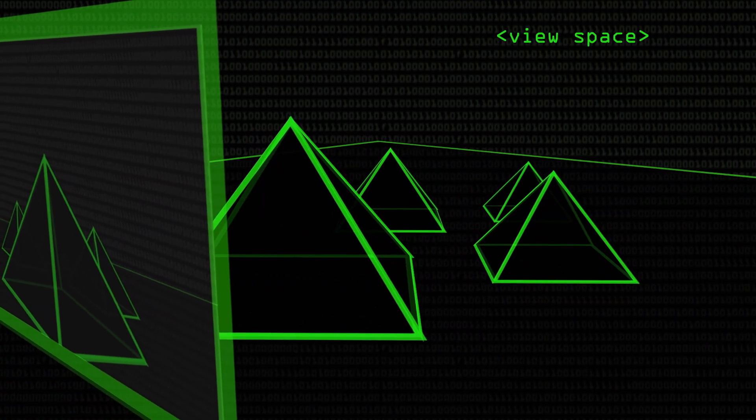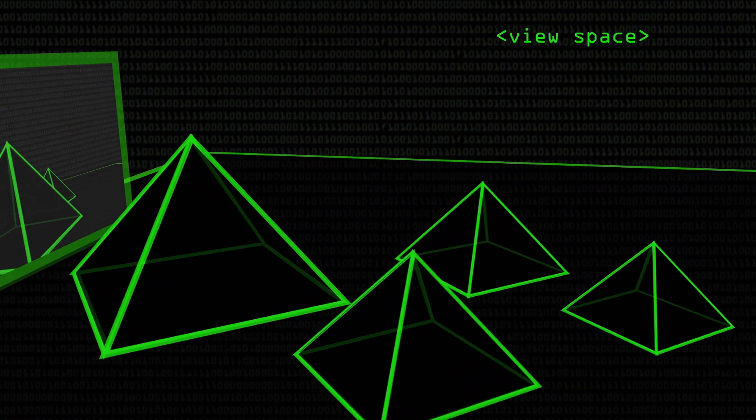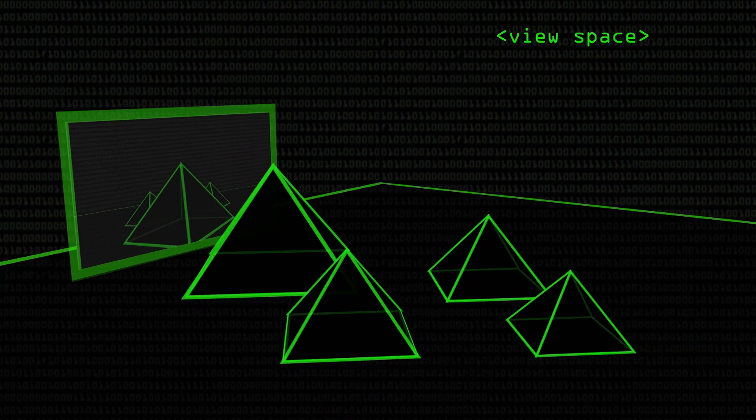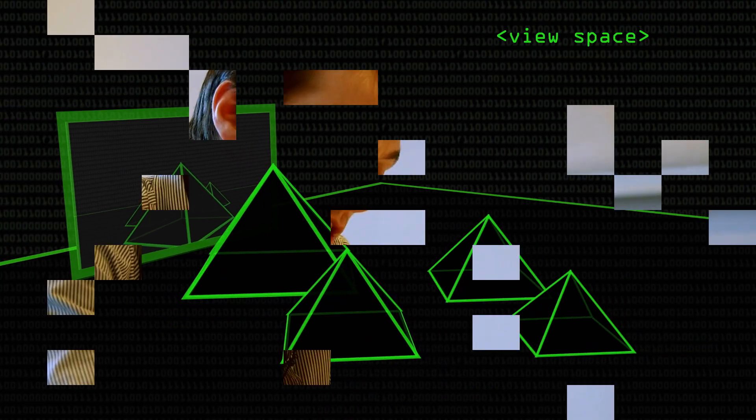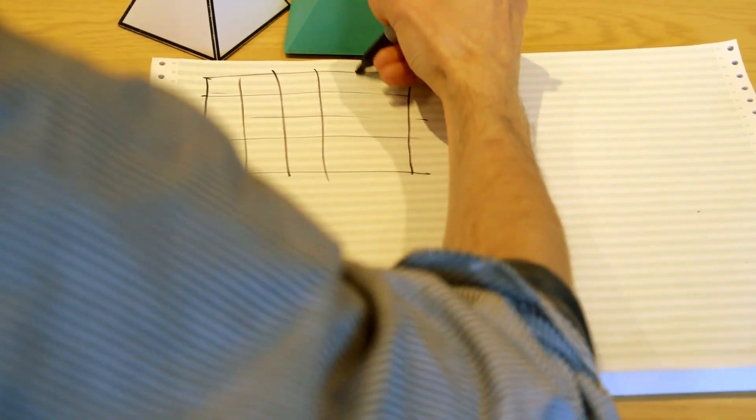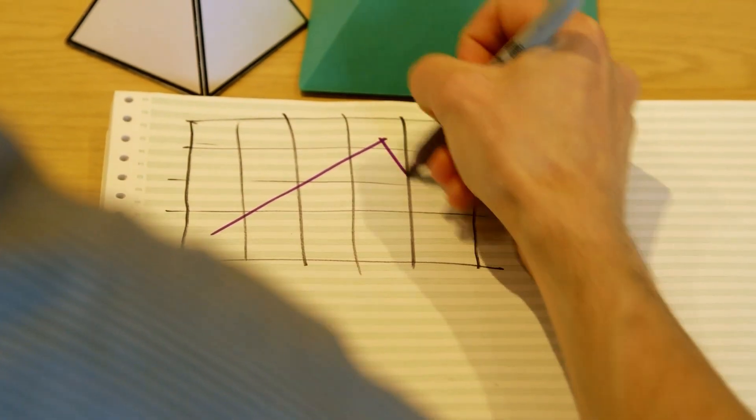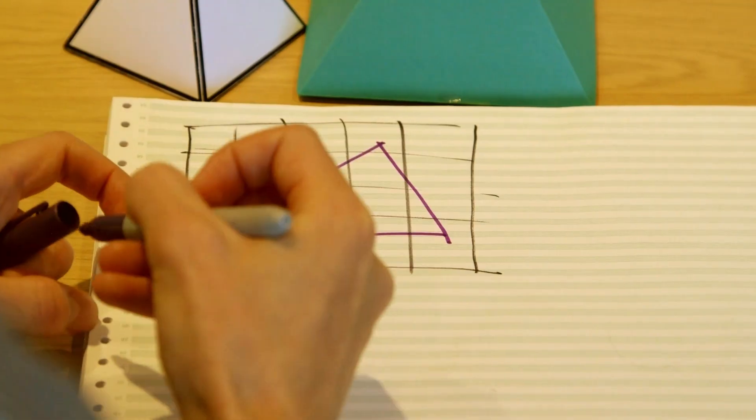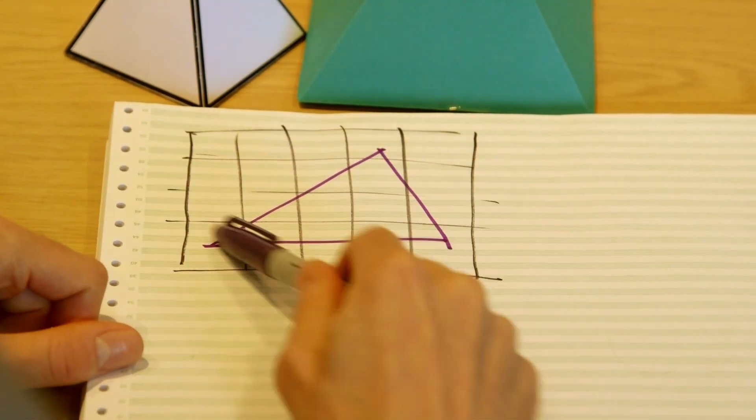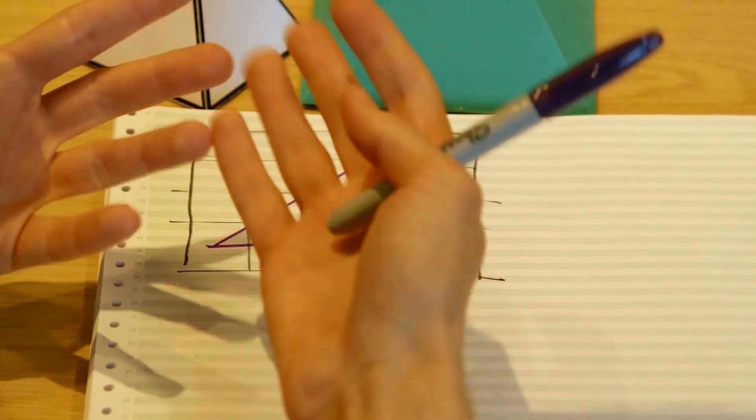So what happens to a triangle to turn it from this representation that we've got, the vertices, the faces, into pixels on the screen? Well let's just draw some pixels out. Not very many pixels, the resolution's a bit low. So let's just take a random triangle and draw it on. Let's draw it in purple. So here's our representation now. It's been squashed down into two dimensions.